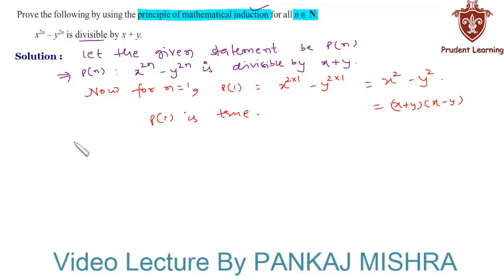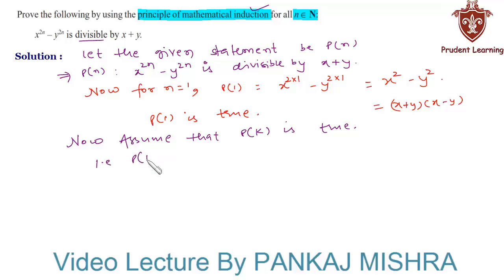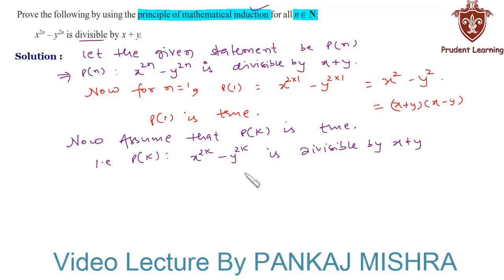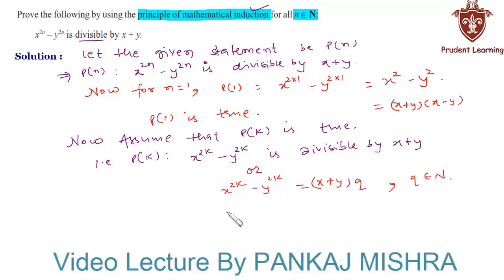In the next step, we assume that P(k) is true for some positive integer k. That is, P(k) states that x raised to 2k minus y raised to 2k is divisible by x plus y. We can also write this as: x raised to 2k minus y raised to 2k equals x plus y times q, where q belongs to the natural numbers.